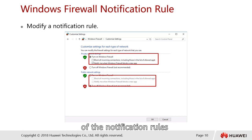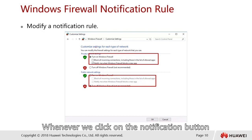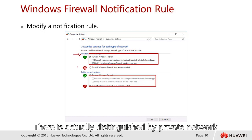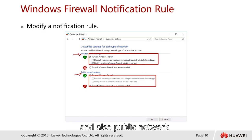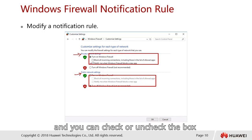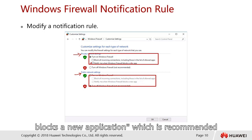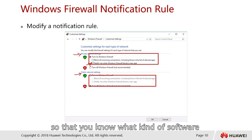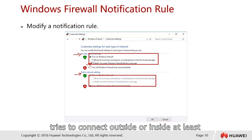In the notification settings, you can separately configure private and public network notification rules. You can check or uncheck the box to notify you when Windows Firewall blocks a new application. This is recommended so you know what software is attempting to connect outside or inside.